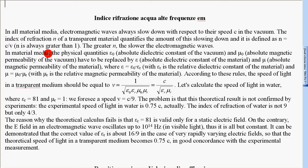In material media, the physical quantities ε0, absolute dielectric constant of the vacuum, and μ0, absolute magnetic permeability of the vacuum, have to be replaced by ε, absolute dielectric constant of the material, and μ, absolute magnetic permeability of the material.